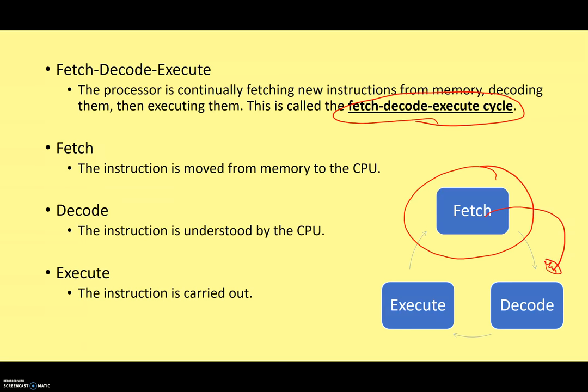Once it's inside the CPU, the next stage is to decode the instruction — that means the instruction is understood by the CPU. Once the instruction is understood, the next stage is for the instruction to be carried out or executed.